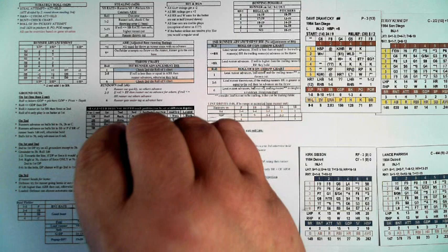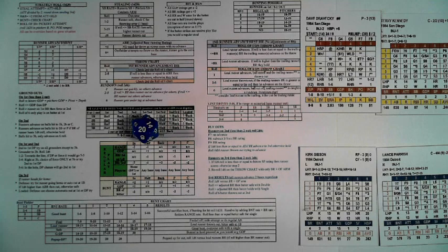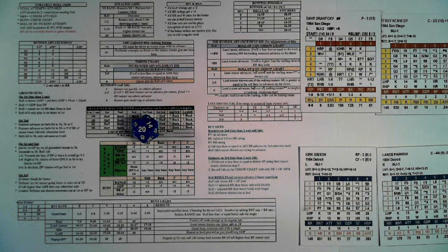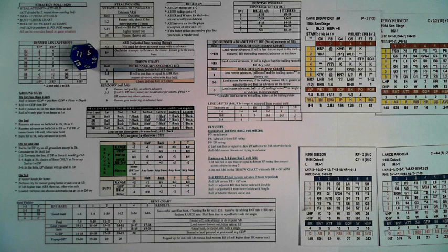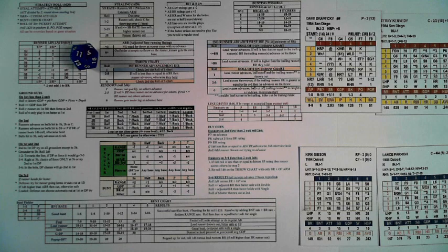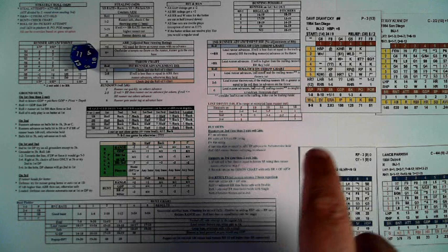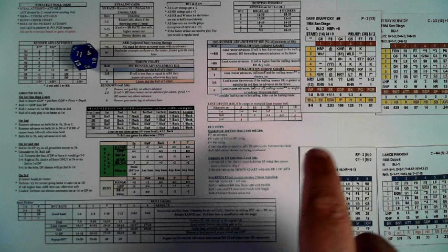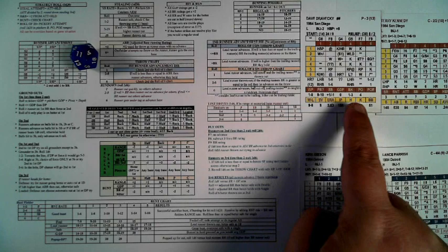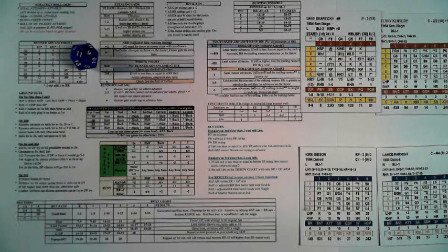If you roll a 20 on the strategy roll with a runner on base, there is a pickoff attempt by the pitcher. Roll 1d20 again and compare to the ranges on the pitcher's card under balk, pickoff, and pickoff error. If the roll falls in any of those ranges, those events happen. Otherwise, go ahead to the pitch. For example, rolling an 11 — it's not a balk, not a pickoff, no pickoff error — so you go to the pitch.